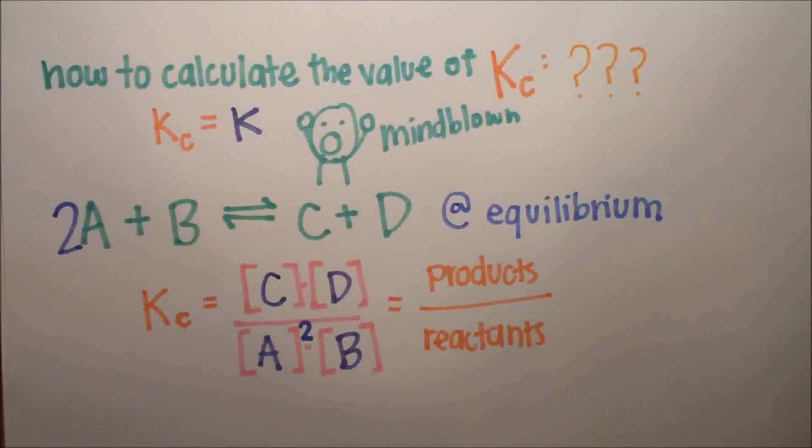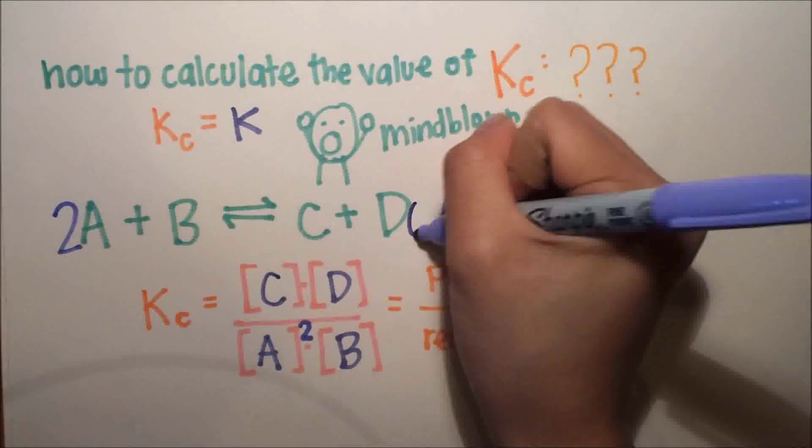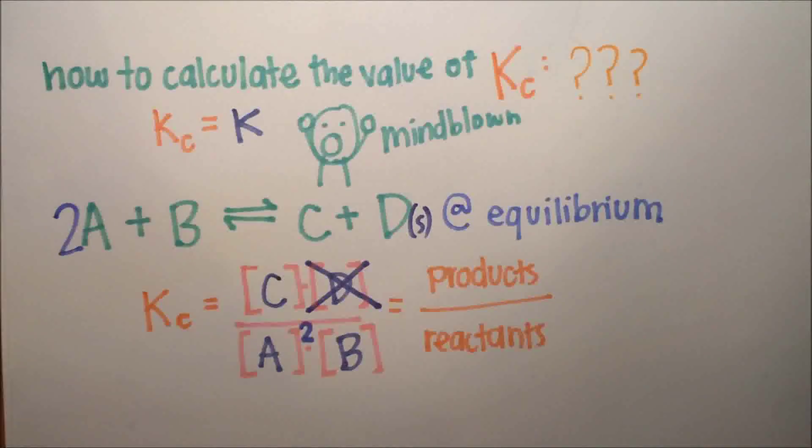Or let's say A has a coefficient of 2. Then in the equation, raise A to the second power, or whatever the coefficient is. Or if D is a solid, take it out of the equation.